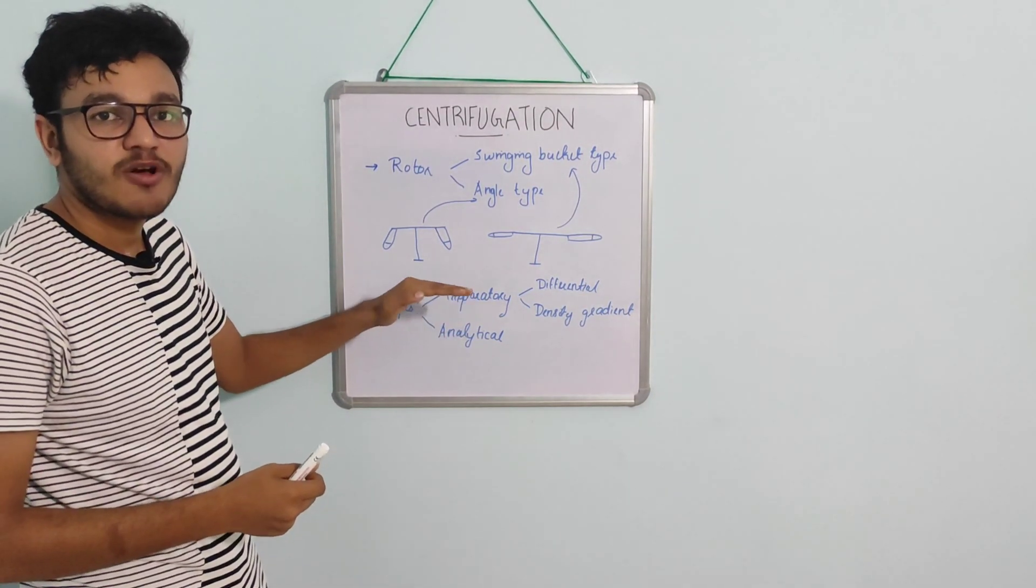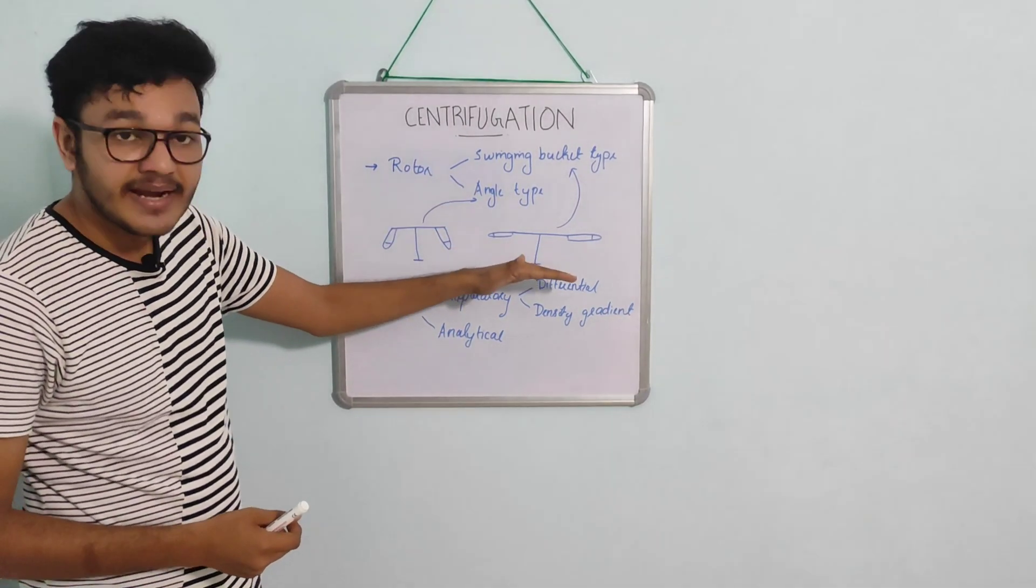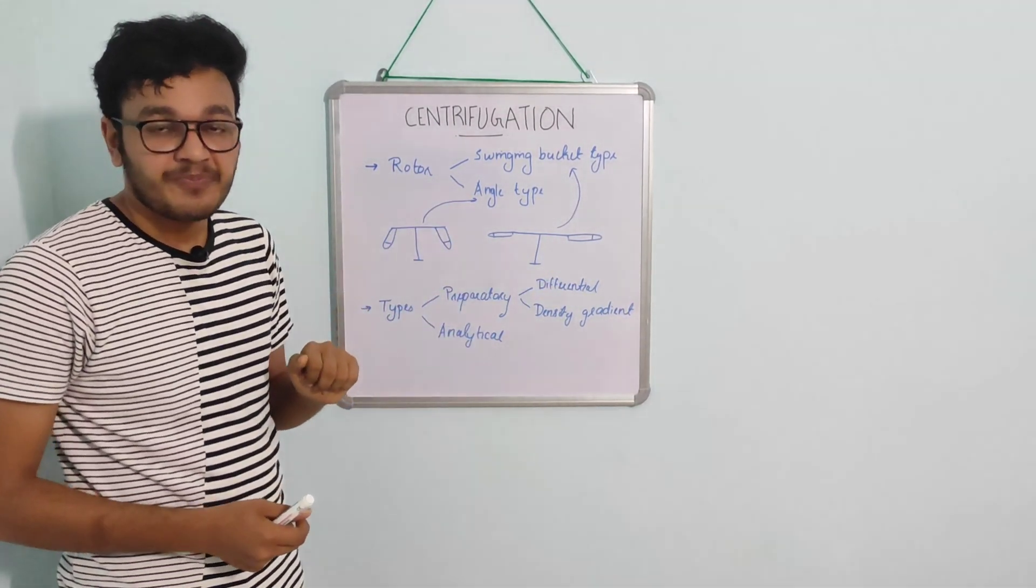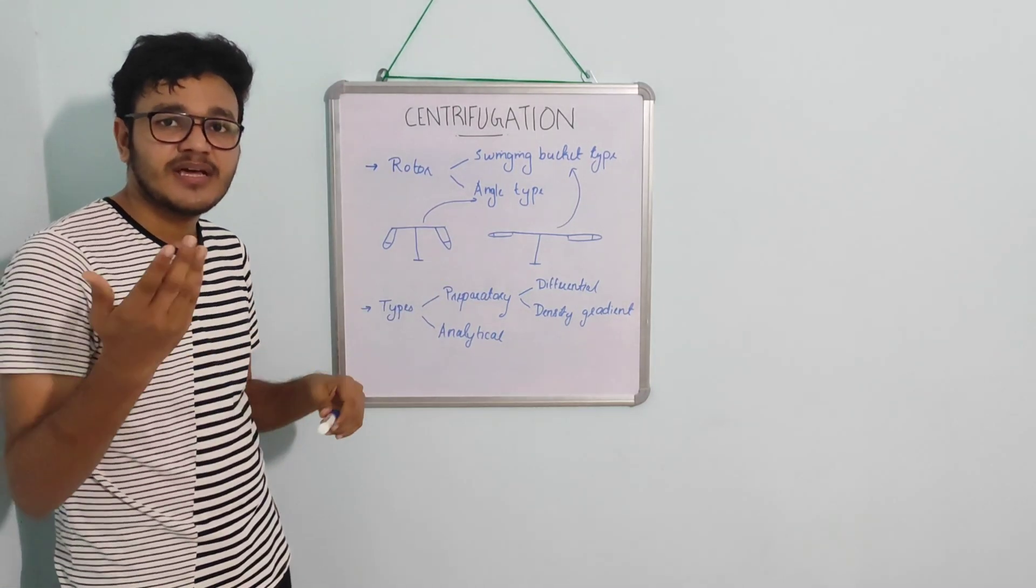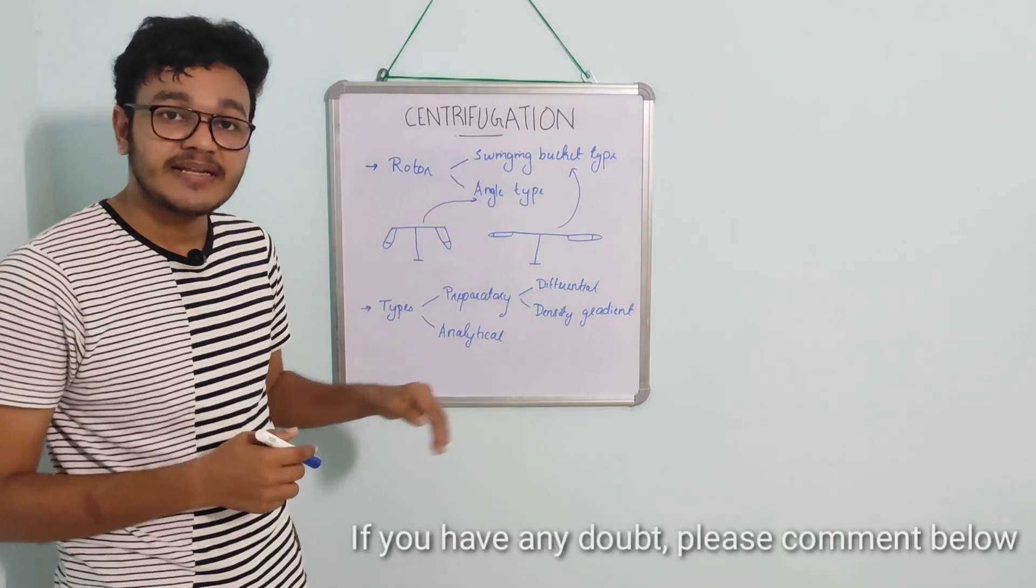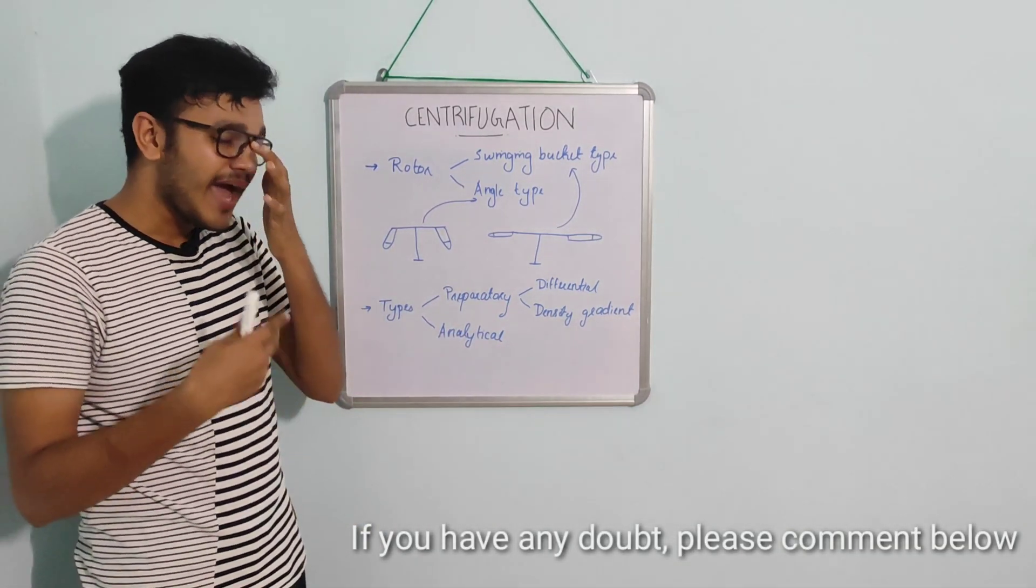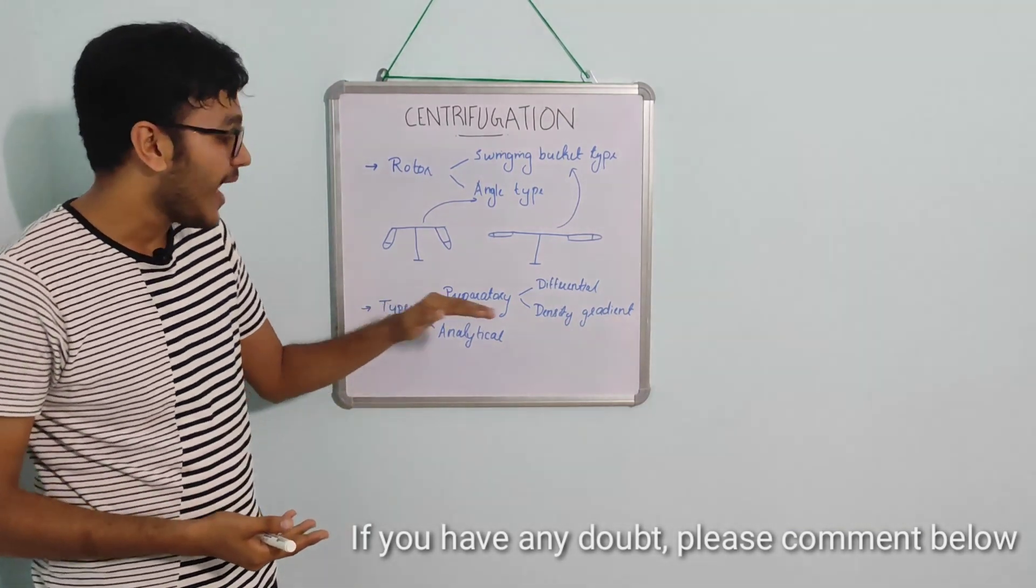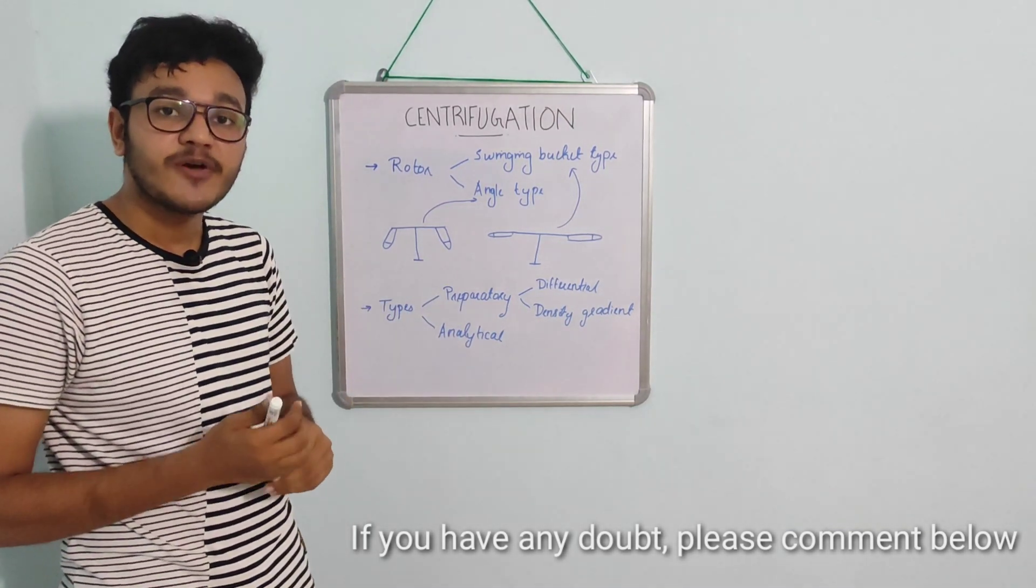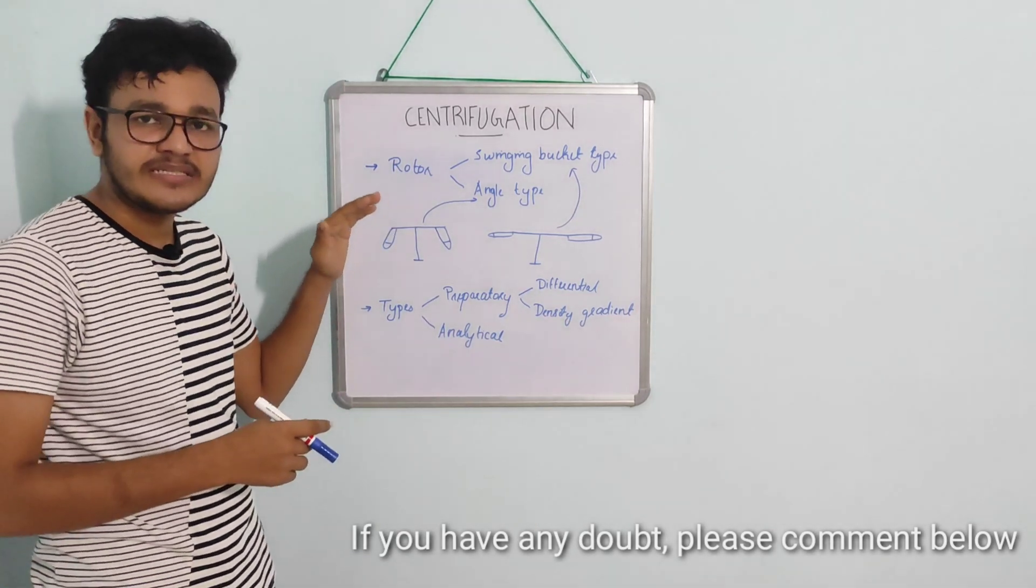We have to focus on preparatory centrifuge more because it is very important. Preparatory centrifuge is again divided into density gradient and differential. Differential centrifuge separates particles based on molecular weight, whereas in density gradient, the particles are separated based upon the density difference. They may have the same size but density may be different. So that property is used for separating the compounds.